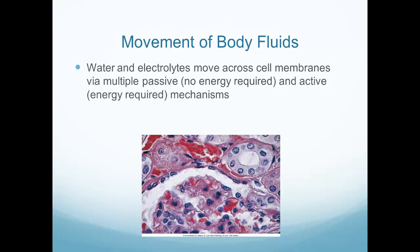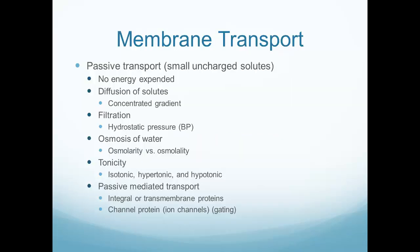Body fluids and electrolytes can move across cell membranes either by a passive mechanism — no energy required — or an active mechanism, like the sodium-potassium pump. Passive transport requires no energy and no ATP. Diffusion is a passive process by which fluid and electrolytes move through a filter, like fluid running through a coffee filter.